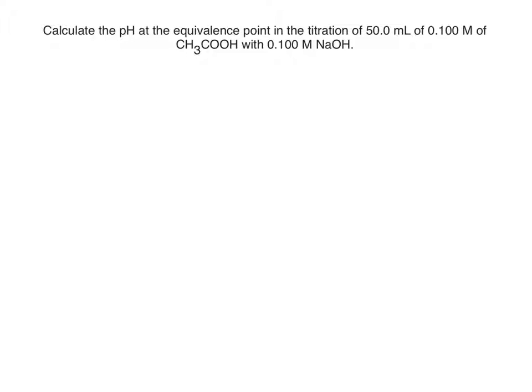But when you're doing a titration of a weak acid, the equivalence point — the pH of the equivalence point — is most of the time higher than 7. And why is this?